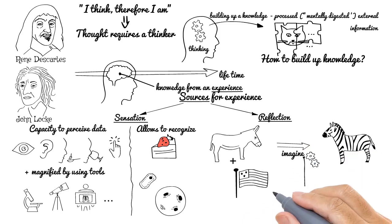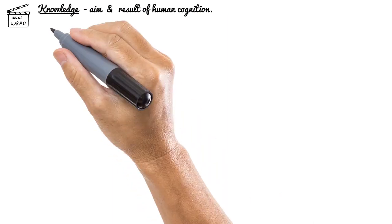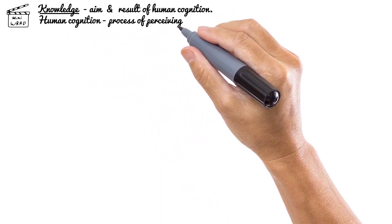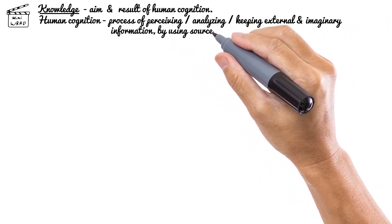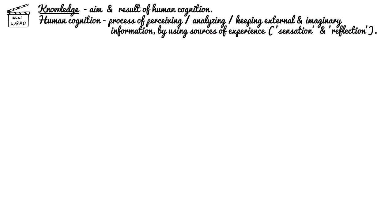This is about reflection - subjective experience of a logical mind's operations. Let's wrap it up and consider knowledge for simplicity as an aim and in the meantime result of human cognition. And human cognition, oversimplified, is a process of perceiving, analyzing, and keeping primarily in human's mind external and imaginary information by using our sources of experience: sensation and reflection.